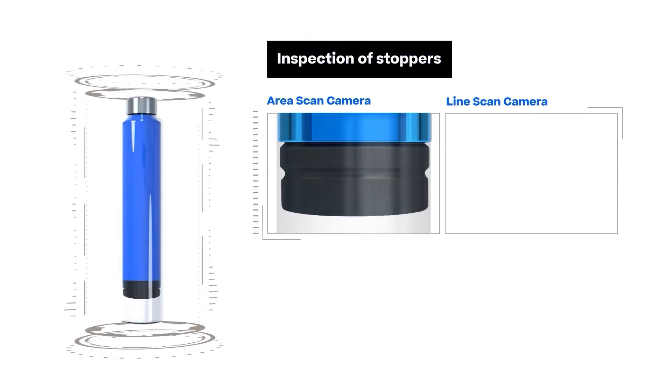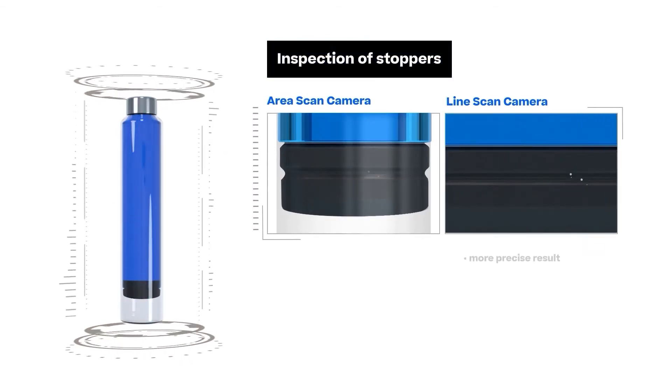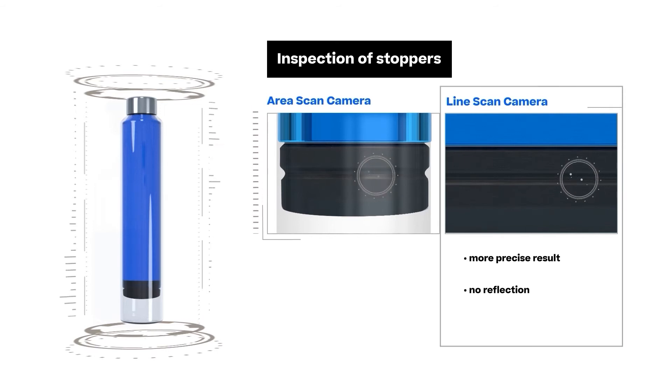When inspecting the stopper area of cartridges, for example, the results of a line scan camera are usually more precise. In addition, homogeneous illumination and a fixed camera angle prevent reflections and minimize false rejections.